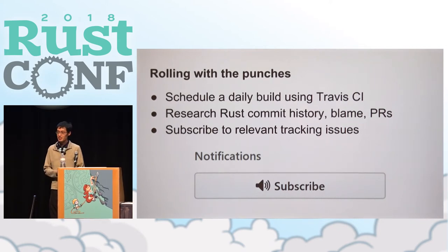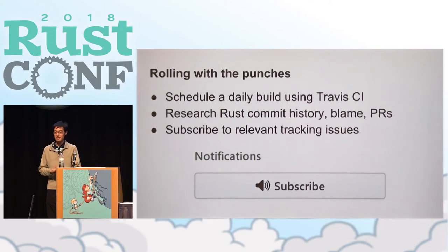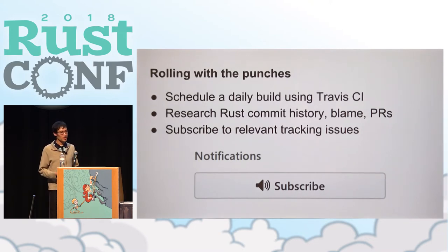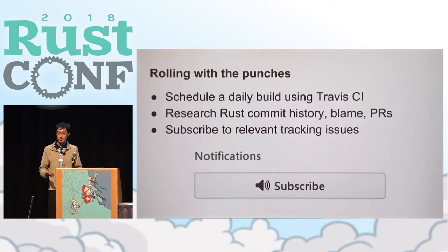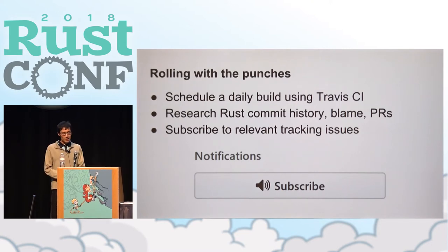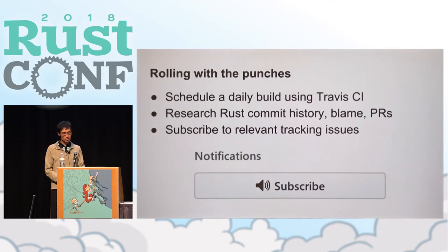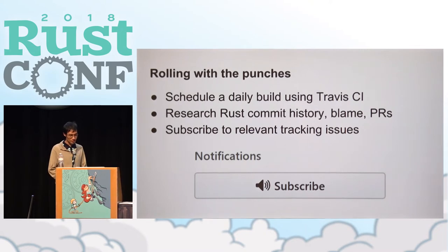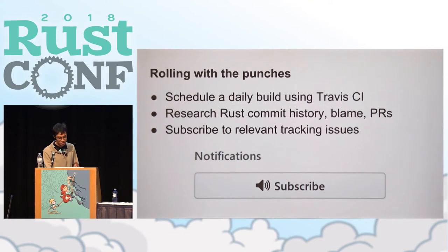Research Rust commit history, blame, and PRs. The nice thing about the Rust development process is that it's really open — that was a major theme in the keynote this morning. So if you find something that breaks, it's just a matter of a few minutes of poking around and you'll find out what changed, why it changed, and what you can do to fix it. And finally, subscribe to relevant tracking issues — all unstable features including the procedural macro API have a GitHub issue that tracks all of the work done on that feature, so it's a good idea to subscribe to that.